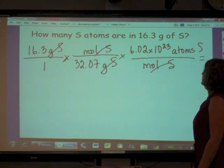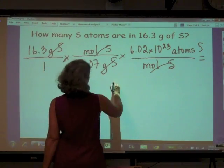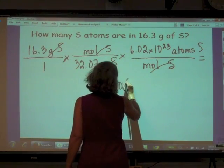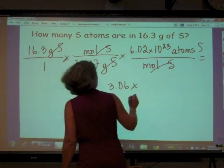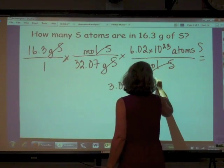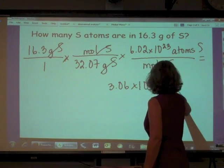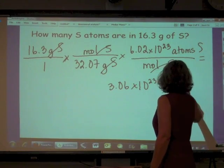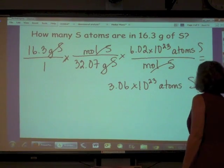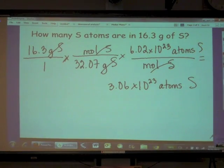And that leaves me with my answer: 3.06 times 10 to the 23rd atoms of sulfur. However, I highly recommend you try this on your calculator.